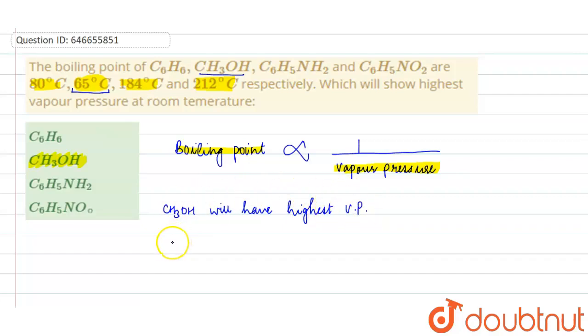And C6H5NO2 will have lowest vapor pressure because its boiling point is highest.